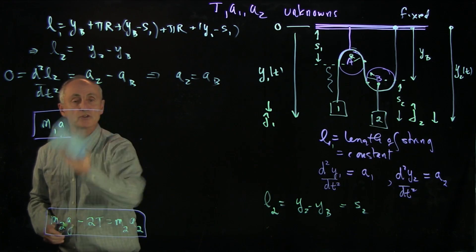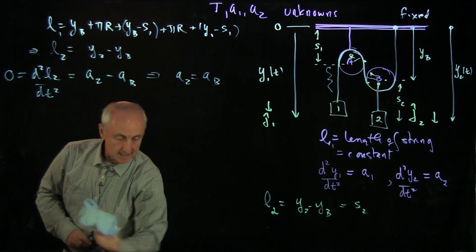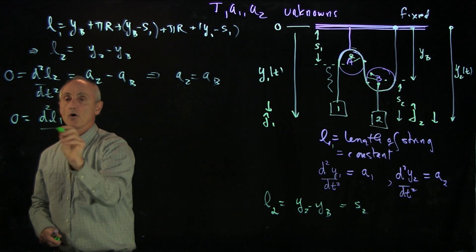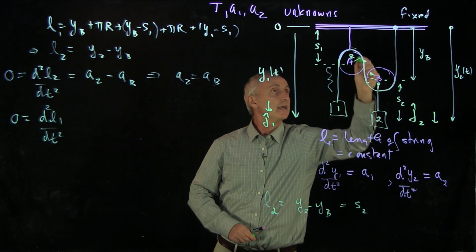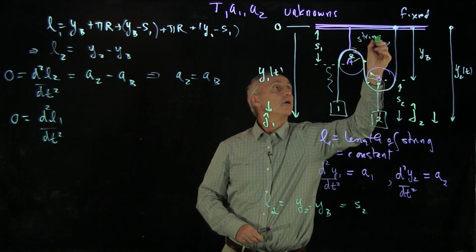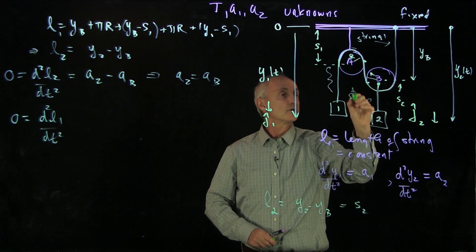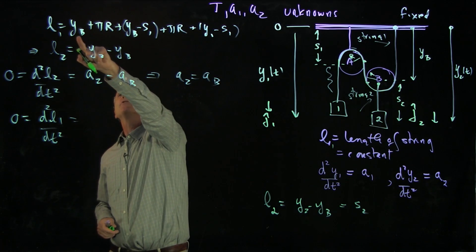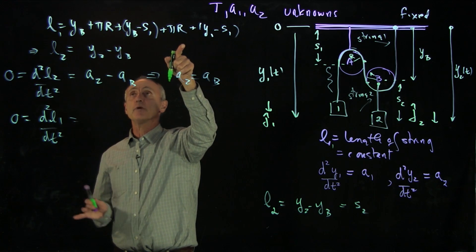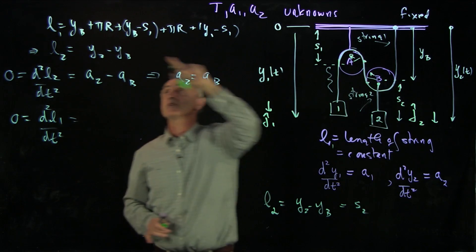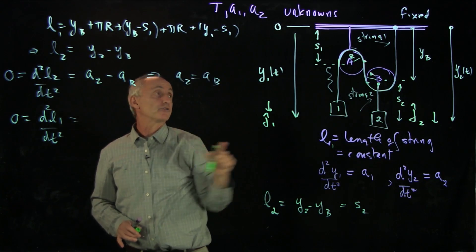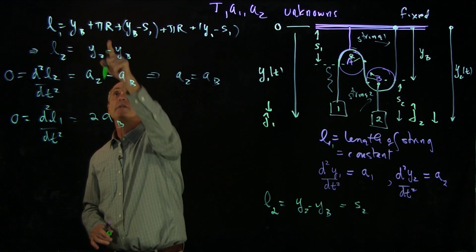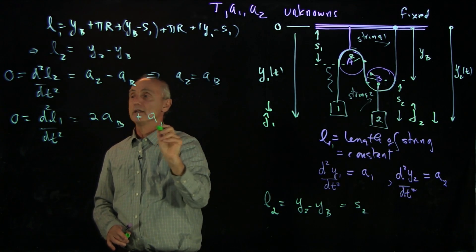Now, let's put these equations aside for the moment. And now let's consider taking two derivatives of length of string 1. Recall string 1 is this object here. We'll call this string 1 and this string 2. Now, again, if we take two derivatives, let's look at our expression first. We see that we have two factors of yb, and we have a bunch of constants whose derivative is 0. So we don't have to worry about the wraparound distances, the πr's. We don't have to worry about the constants s1. All we have to think about is which quantities are changing in time. So we have 2ab when we take two derivatives, and we have one factor of a1, and that's 0.